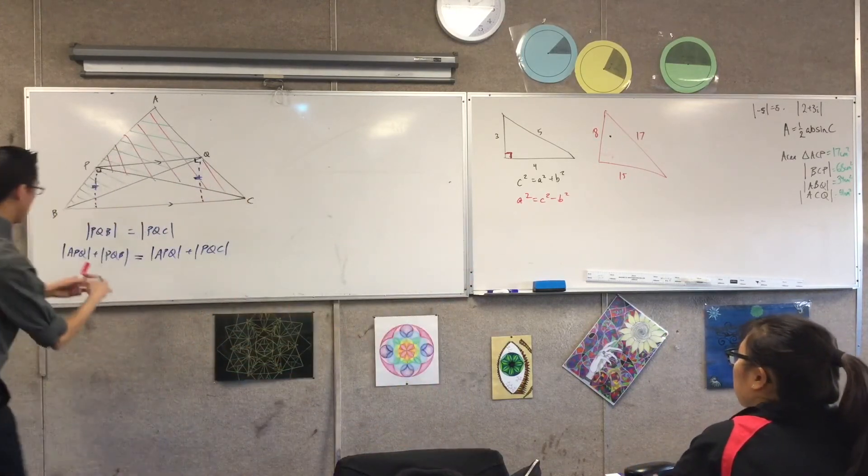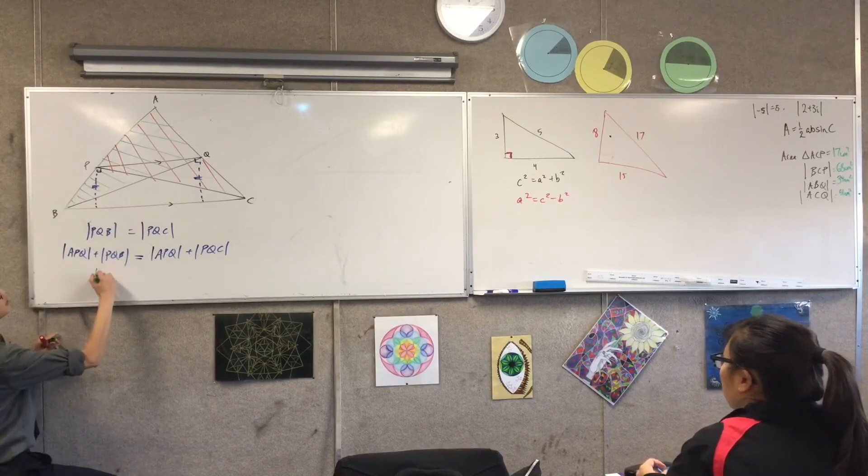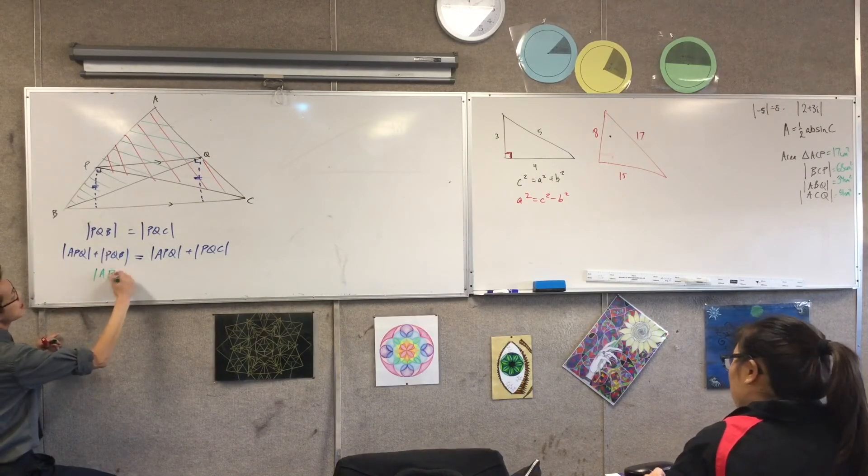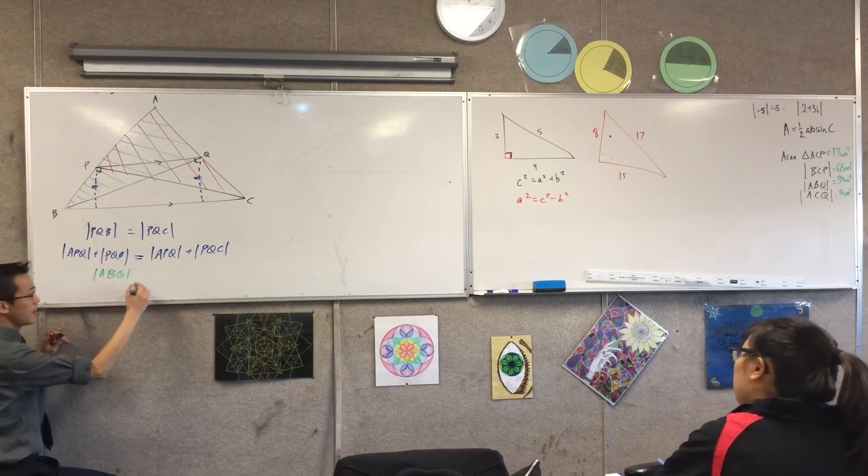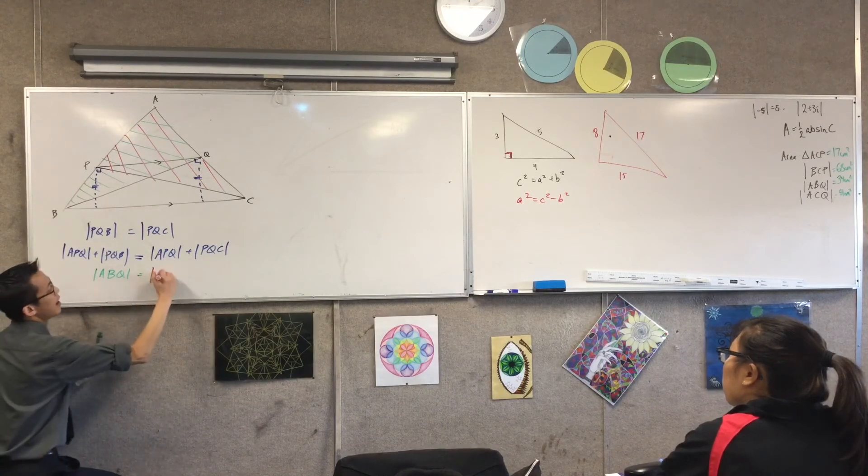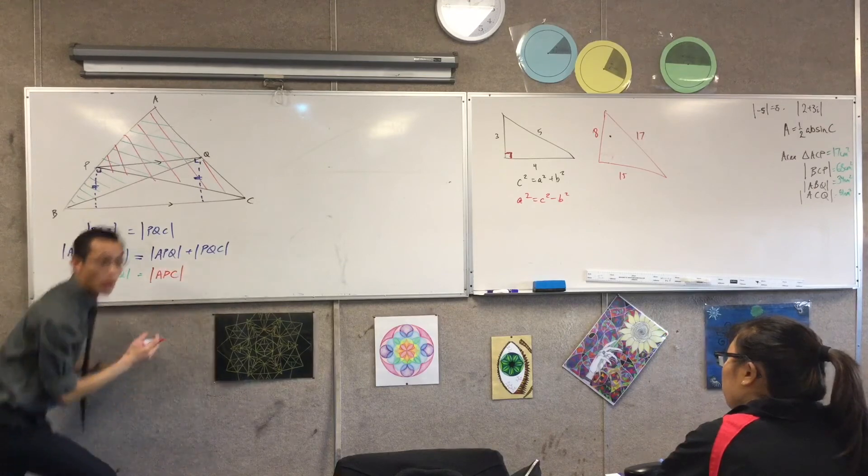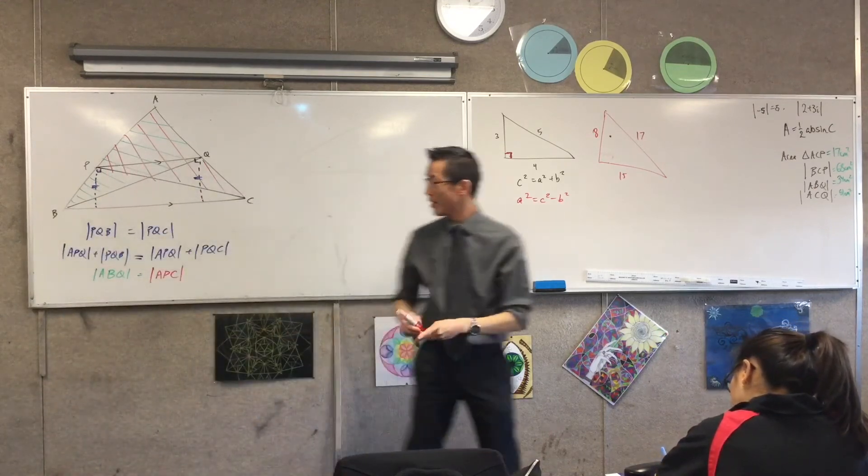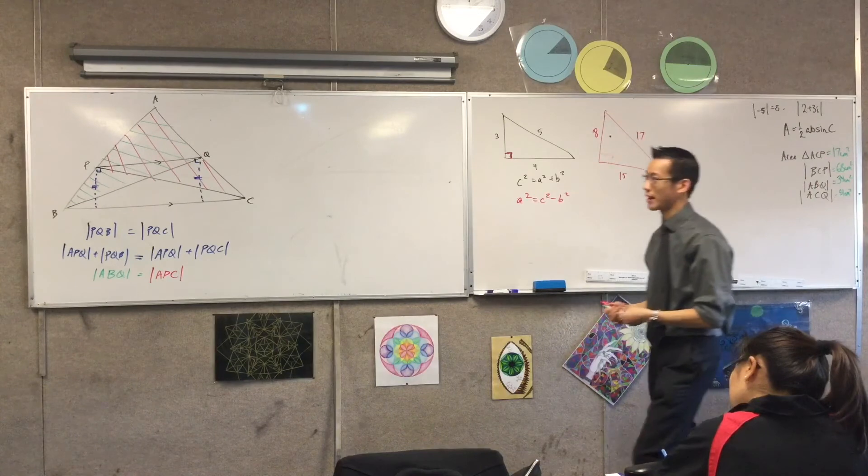So, what I've just shown is, here's the green one over here, this is ABQ. Do you agree? And this guy on the right is APC. So, like your intuition said, the green area and the red area are, in fact, the same, okay?